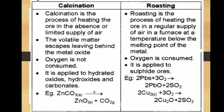Difference between calcination and roasting: Calcination is the process of heating the ore in the absence or limited supply of air, whereas roasting is the process of heating the ore in a regular supply of air in a furnace at a temperature below the melting point of the metal. In calcination, volatile matter escapes leaving behind metal oxides and oxygen is not consumed, while in roasting, oxygen is consumed. Calcination is applied to hydrated oxides, hydroxides, and carbonates, whereas roasting is applied to sulfide ores. Example — calcination: zinc carbonate heated in absence of air forms zinc oxide plus CO2; roasting: lead sulfide heated in presence of air forms lead oxide plus SO2.